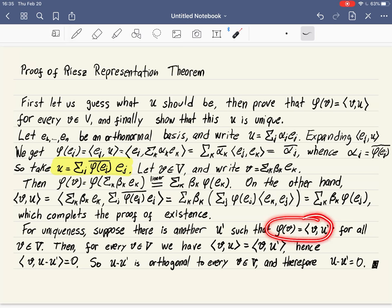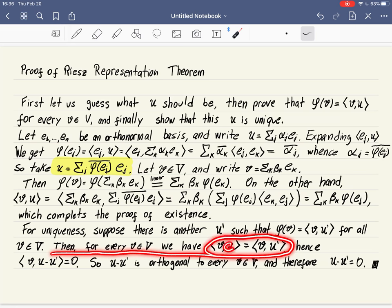The property that φ(V) equals ⟨V,U'⟩ for every V in V. And let's show now that U' has to be the same as U. And then we're going to use an argument that is very typical in functional analysis, very typical in linear algebra. How do we show that two vectors are the same? We show that their difference is zero. How do we show that their difference is zero? Well, let's see. For every V, we have this. By assumption, we already found some U with this property. We are assuming there is another U with the same property. For every V, we have this identity. Which means the difference here equals zero.